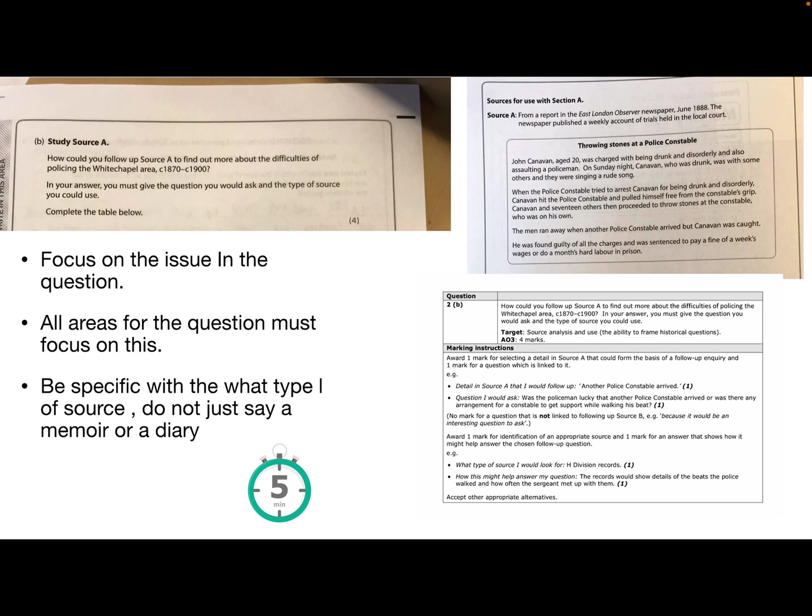The key thing is how far for that six to eight. So if you're judging that it's very useful and you're explaining that then that's going to push you up into that six to eight mark brand. The final question on Whitechapel then is this idea about the detail in the source. Now this should be easy if you do it in the right way. So it asks you how can you follow up the source to find out more about the difficulties of policing in the Whitechapel area. So if you just write about something from the source and not the difficulties of policing and you don't focus it on the issue you're not going to get the marks. That's the bit where most people lose their marks.